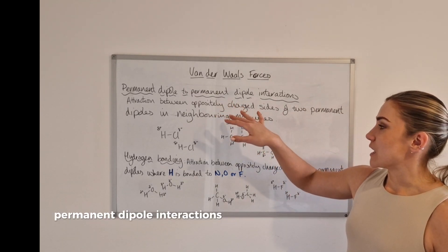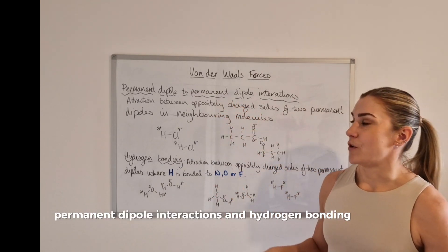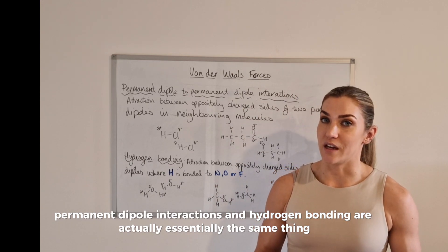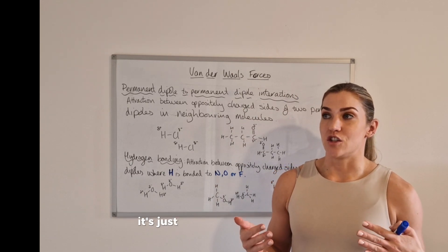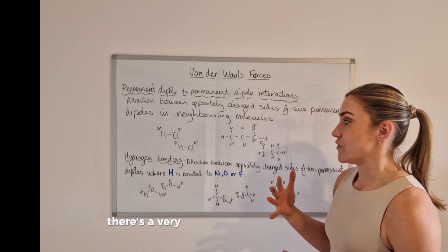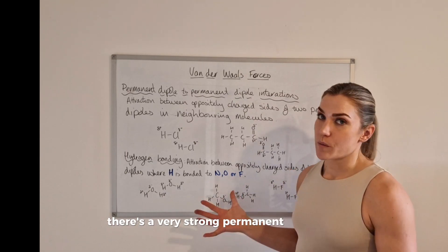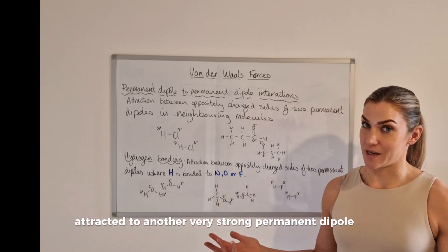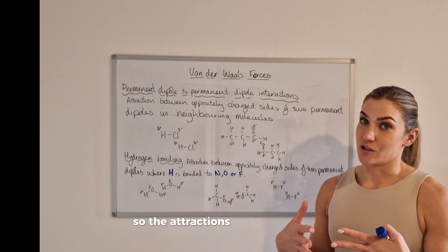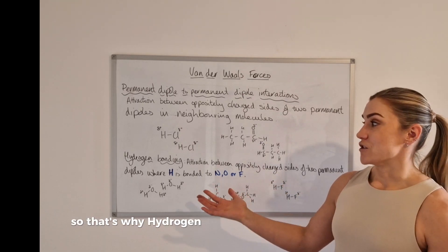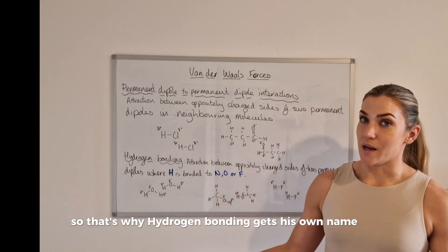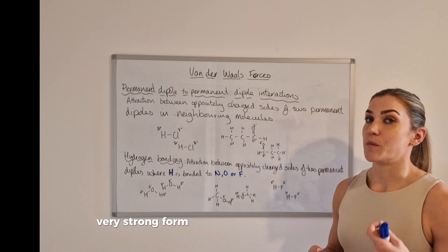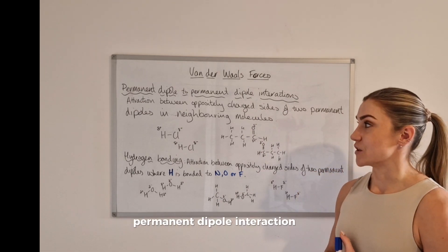Permanent dipole to permanent dipole interactions and hydrogen bonding are actually very similar — they're essentially the same thing. It's just that in one instance there's a very strong permanent dipole attracted to another very strong permanent dipole, so the attraction is very strong. That's why hydrogen bonding gets its own name: it's just a very, very strong form of a permanent dipole to permanent dipole interaction.